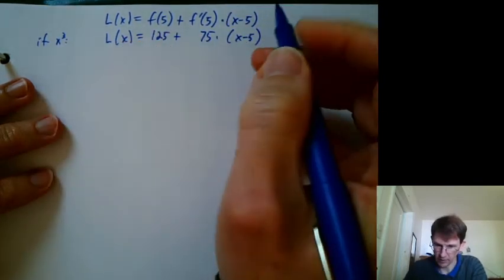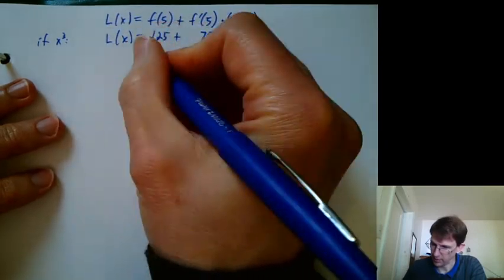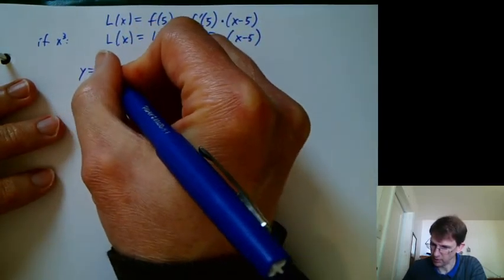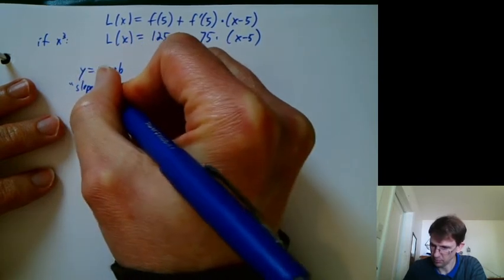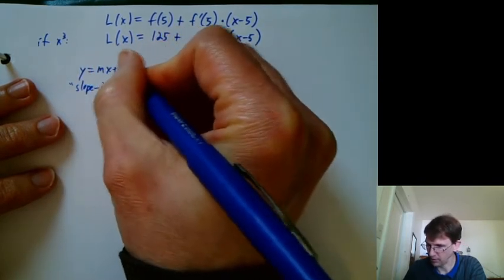So looking at this formula, is this like y equals mx plus b, which is called slope-intercept form? Because it's got the slope m and the intercept b.